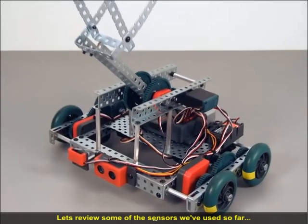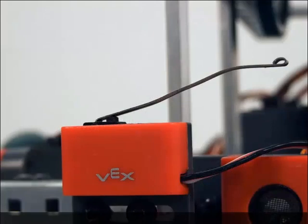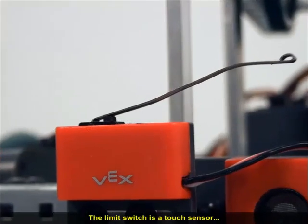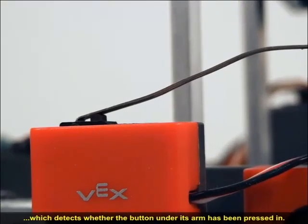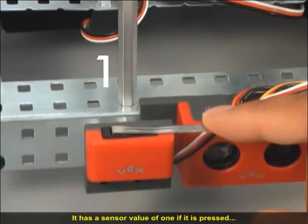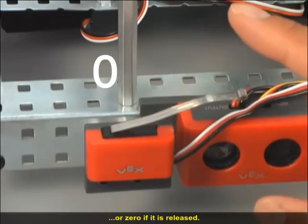Let's review some of the sensors we've used so far. The limit switch is a touch sensor, which detects whether the button under its arm has been pressed in. It has a sensor value of 1 if it's pressed, or 0 if it's released.